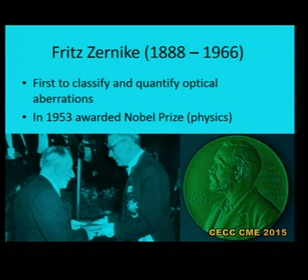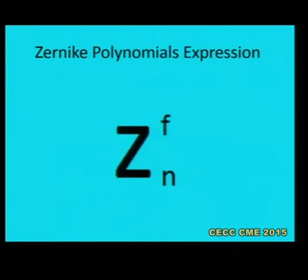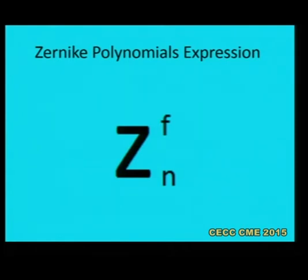It was Fritz Zernike who was the first to classify and quantify optical aberrations in 1935, and in 1953 he was awarded the Nobel Prize in Physics for this work. His polynomial expression, Z, has a numerator representing the order of aberration — ordered from 1 to 15 — and a frequency term describing how many times the same aberration repeats when scanned counterclockwise from the 3 o'clock position of the cornea in a full circle.